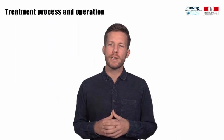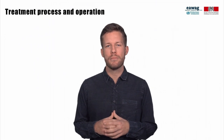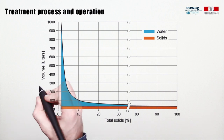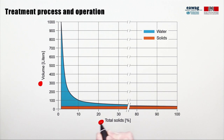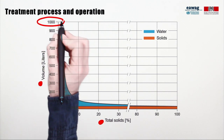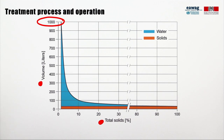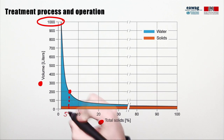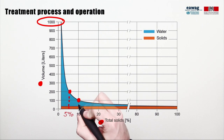So what is the benefit of a settling thickening tank? Let's consider a hypothetical example. This slide shows the change of sludge volume as a function of the solids content. As you can see from the slope of the curve, the reduction in sludge volume is highest at low solid contents. Let's assume we have 1,000 liters of sludge with a solid content of 1%, which is typical for septic tank sludge. Increasing solid content would reduce the sludge volume to 200 liters for 5% solids and 100 liters for 10% solids — a reduction of 80 and 90% of the initial volume. These are typical solids contents from settling thickening tanks in Accra and Dakar.